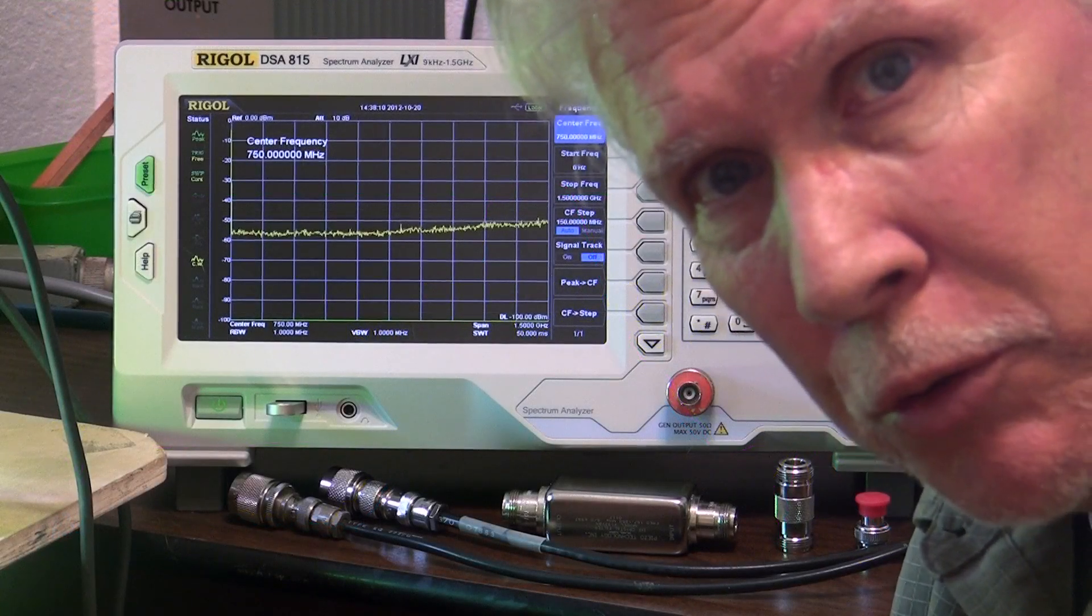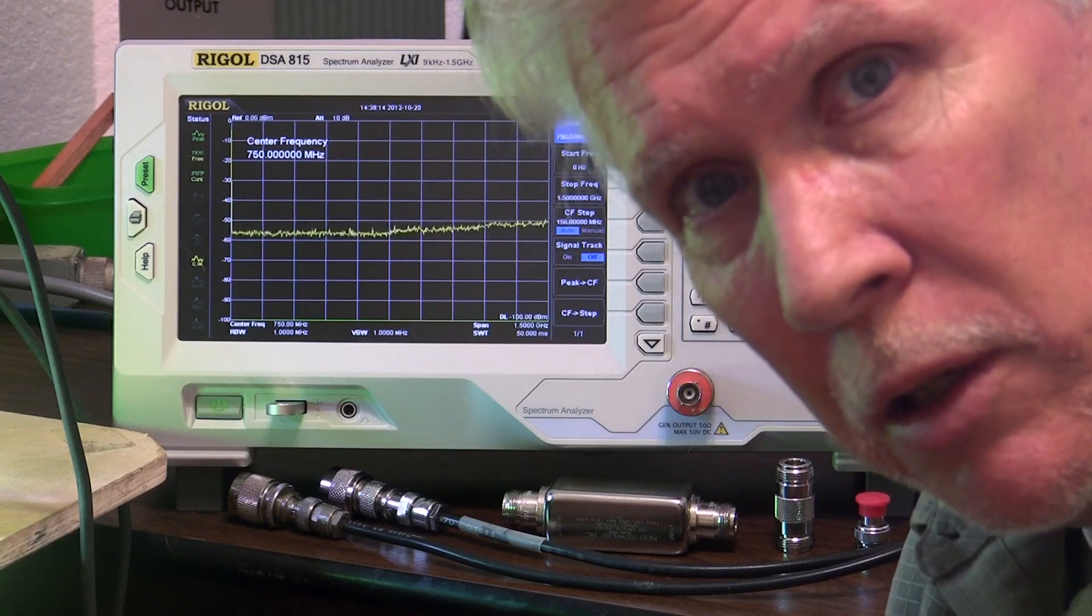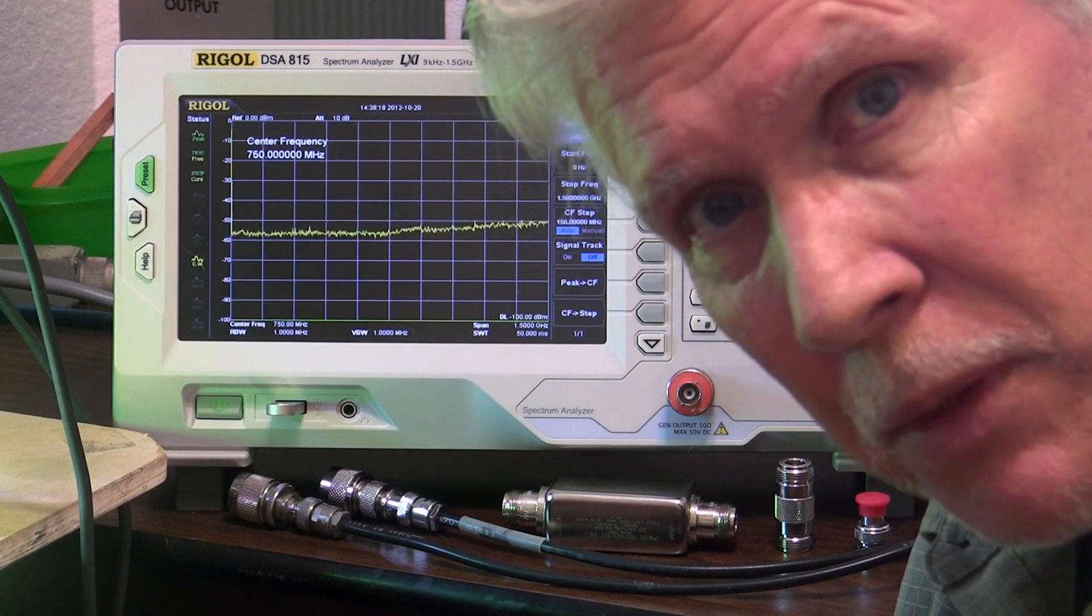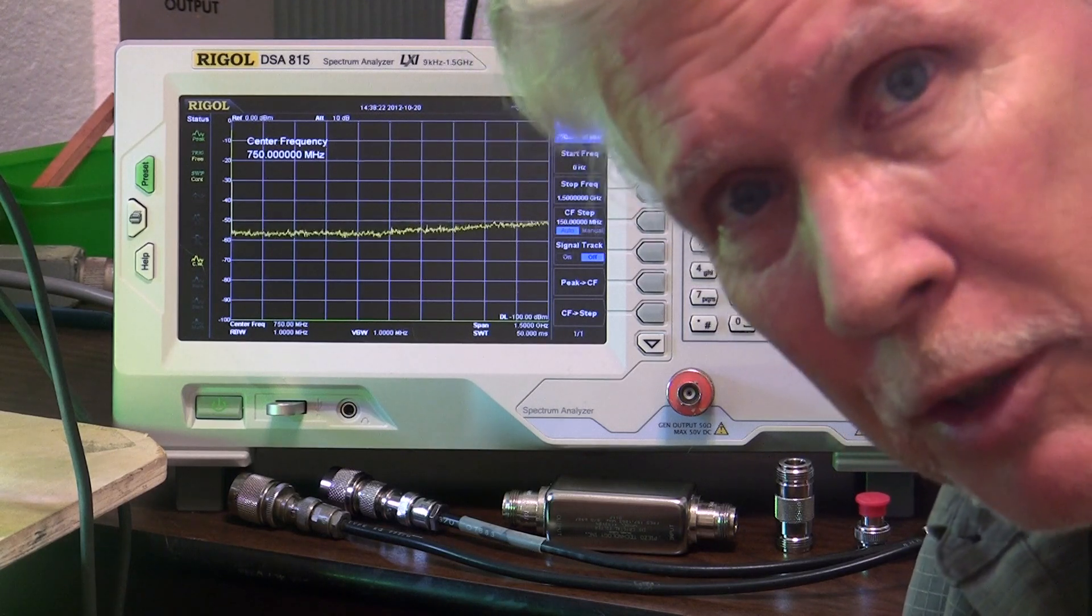As promised, I am going to show you some aspects of the tracking generator of the Rigel DSA815-TG, which is an inexpensive spectrum analyzer that has been put on the market in recent times.